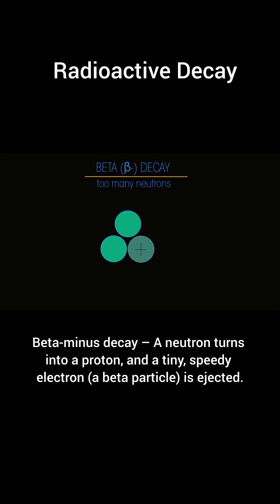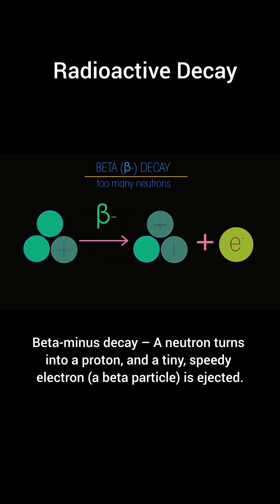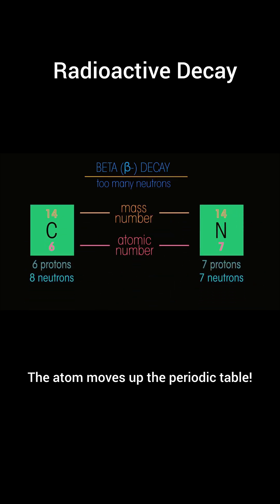Beta minus decay—a neutron turns into a proton, and a tiny, speedy electron, a beta particle, is ejected. The atom moves up the periodic table.